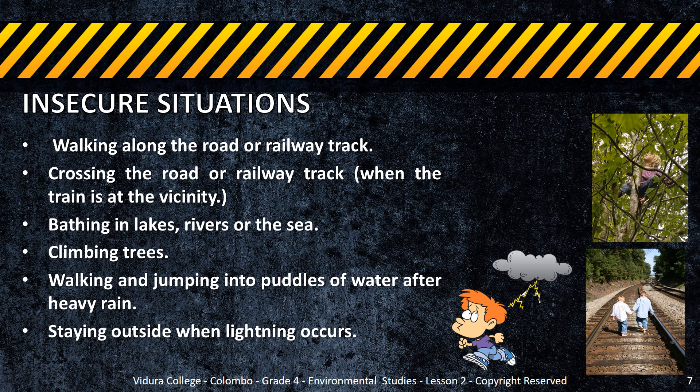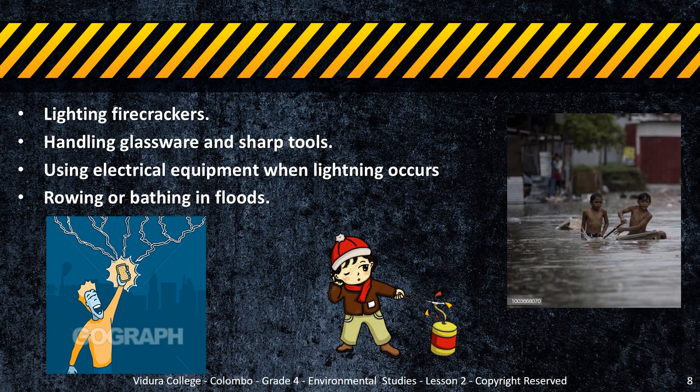Some of them are: walking along the road or railway track, crossing the road or railway track when a train is in the vicinity, bathing in lakes, rivers, or the sea, climbing trees, walking and jumping into puddles of water after heavy rain, staying outside when lightning occurs, lighting firecrackers, handling glassware and sharp tools, using electrical equipment when lightning occurs, and roving or bathing in floods. You must make sure to avoid these situations as they cause harm.